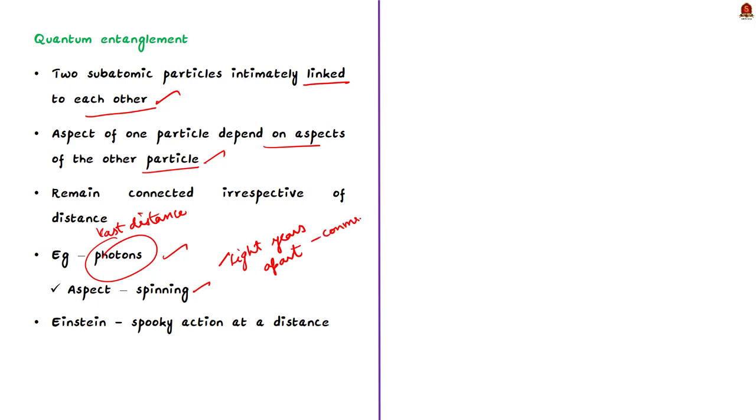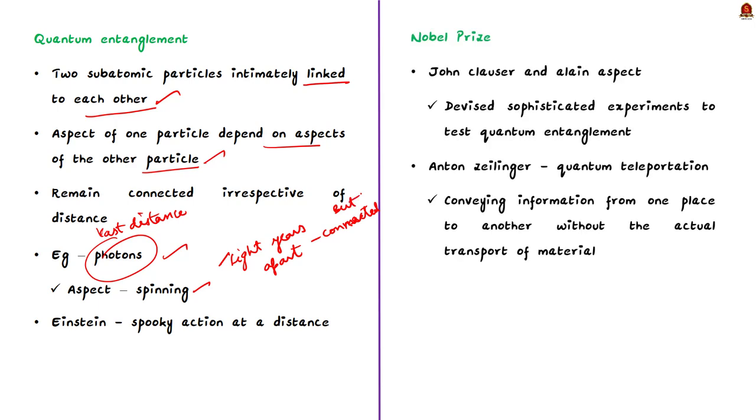And for the work in this phenomenon only, Nobel Prize was awarded. John Clauser and Alain Aspect devised sophisticated experiments to test quantum entanglement. And they established through Bell's inequality that entanglement was a consequence of quantum physics. The third laureate Anton Zeilinger and his group used the phenomenon of entanglement to perform what is called quantum teleportation. This is a way of conveying information from one place to another without the actual transport of material.